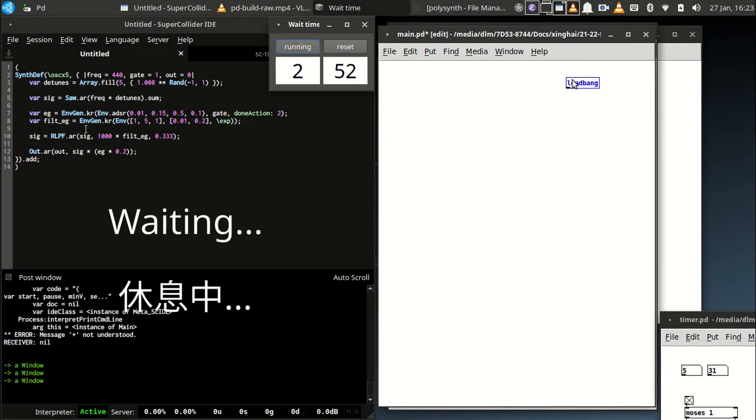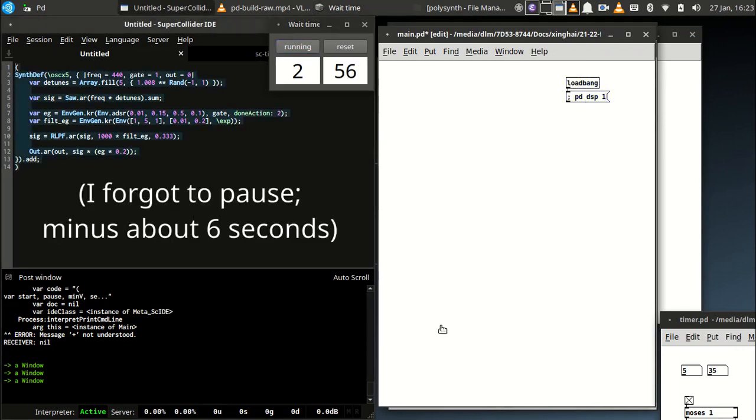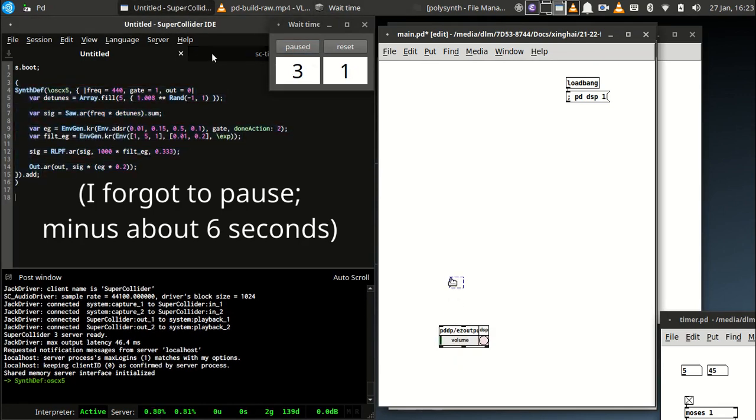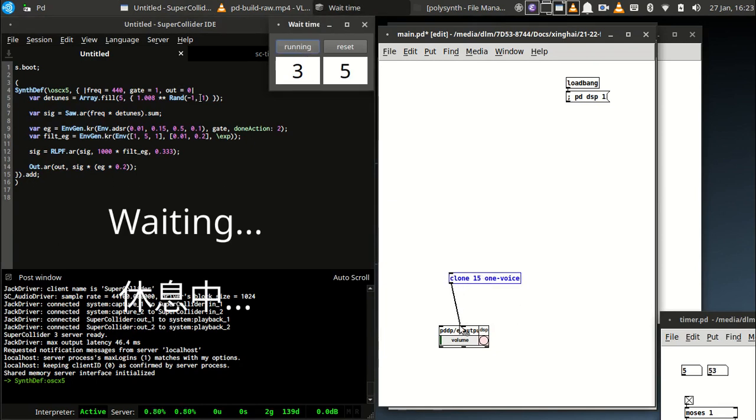In SuperCollider to make audio, we need to boot the audio server. I'm making an analog to that on the right side by turning on Pure Data's DSP. Now there's the clone for the polysynth.